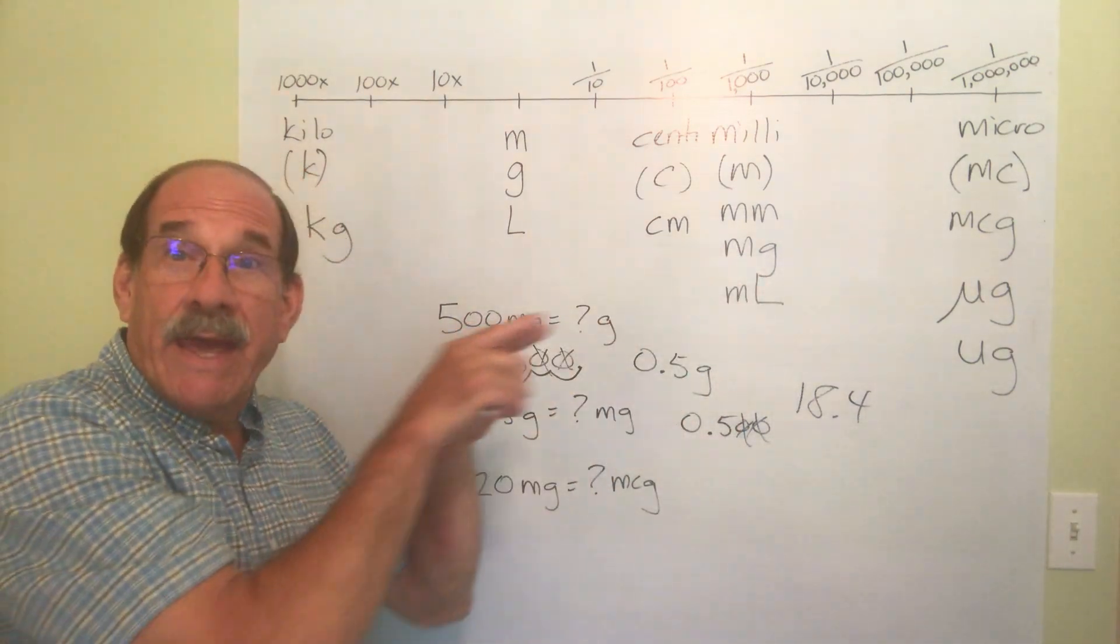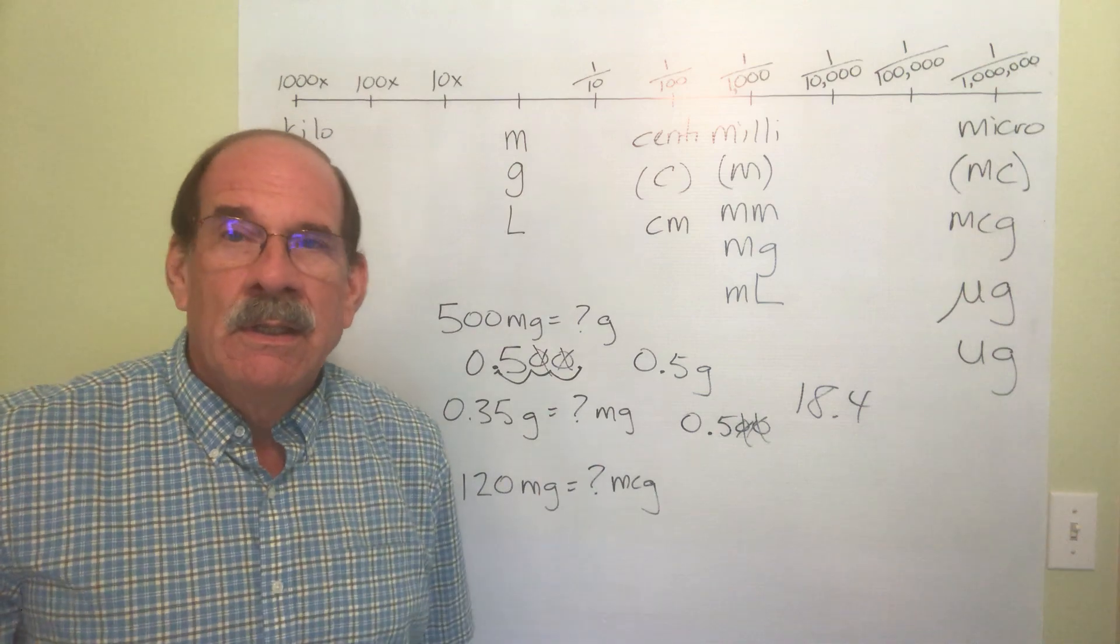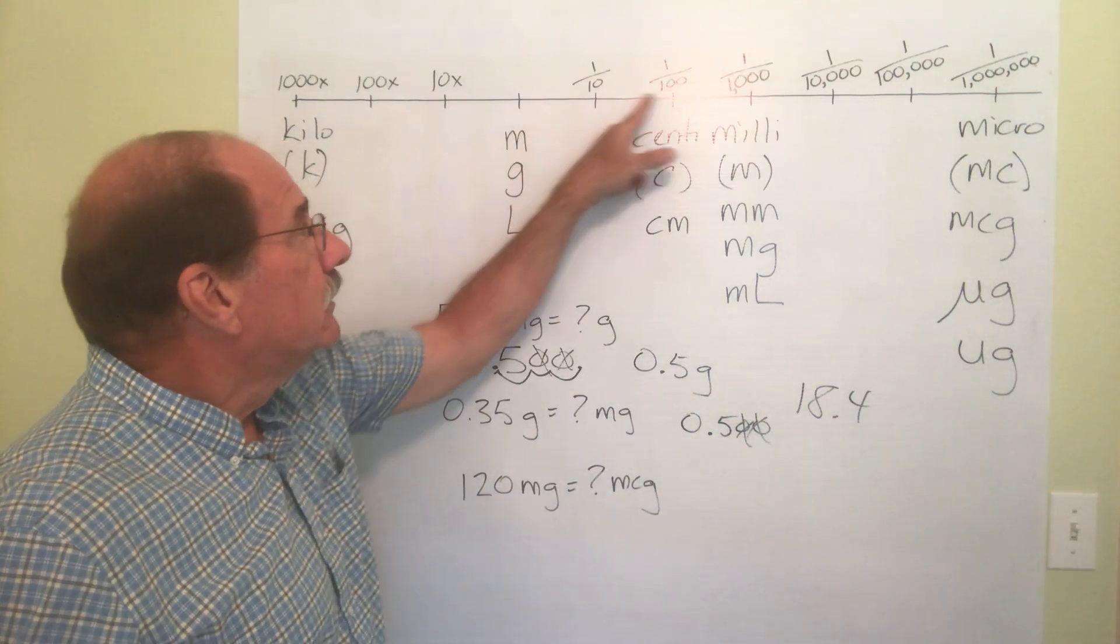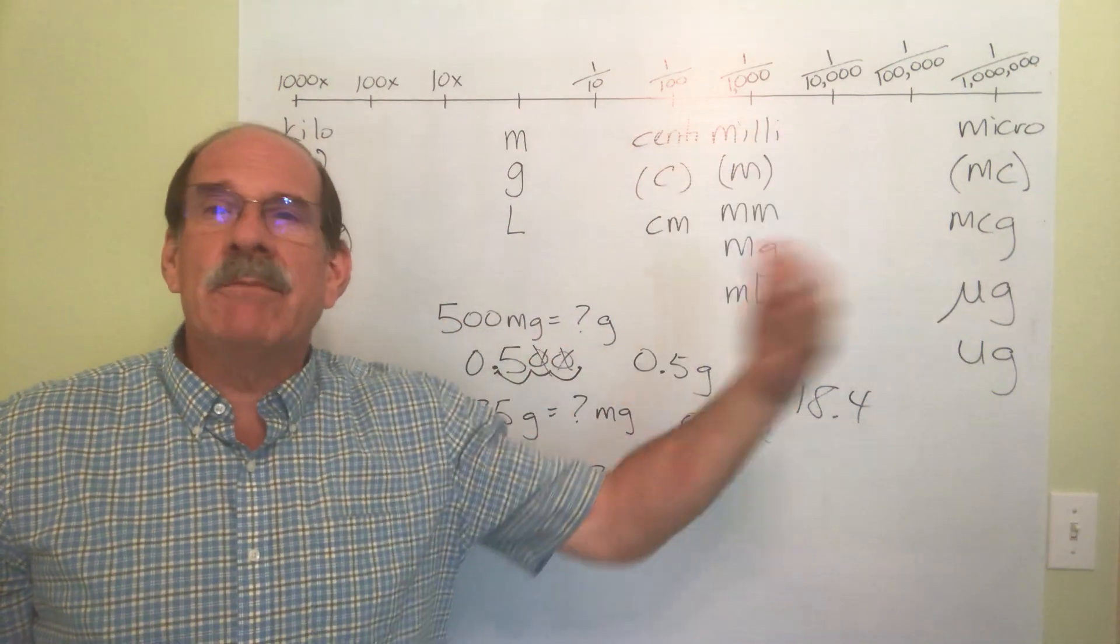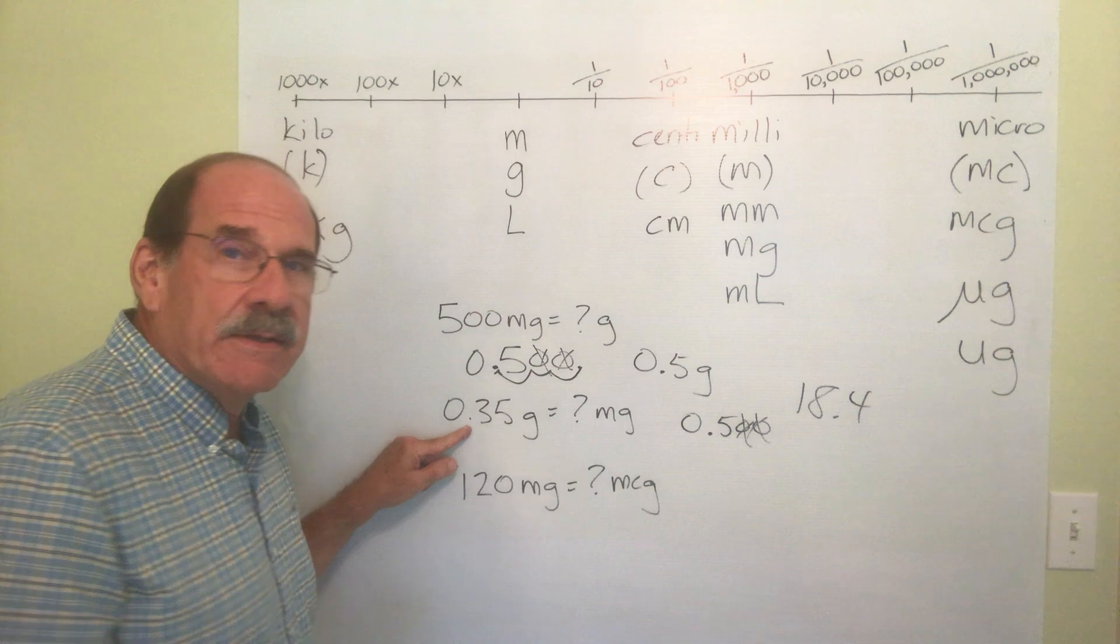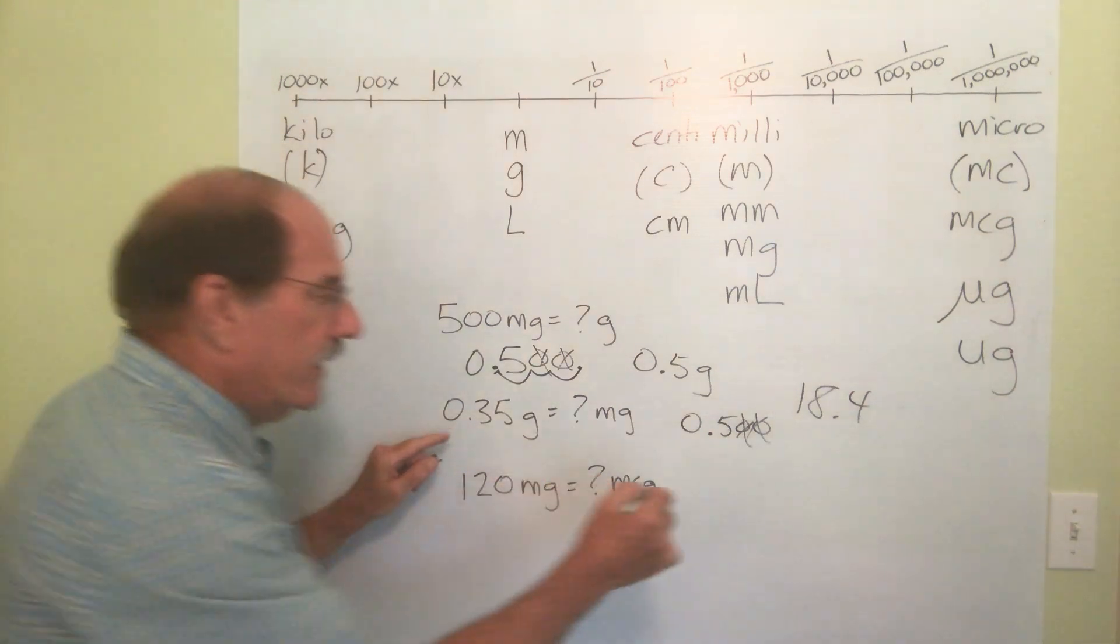So I'm going which way? That way, to the right. How many jumps? How far? One, two, three. I'm going three jumps to the right.